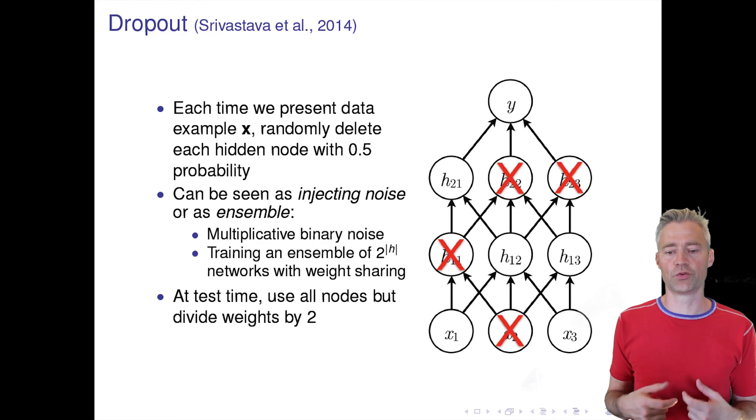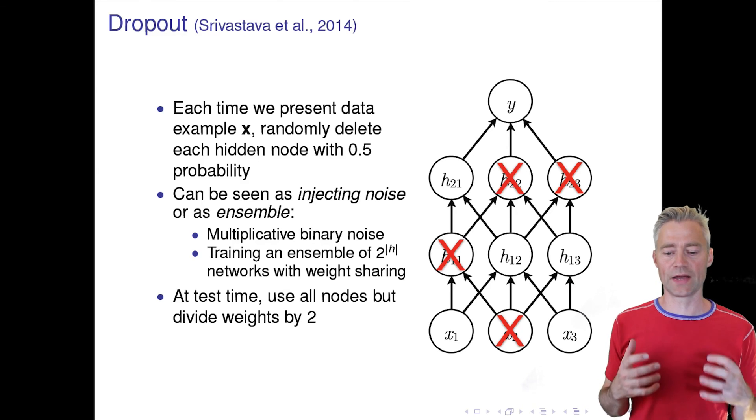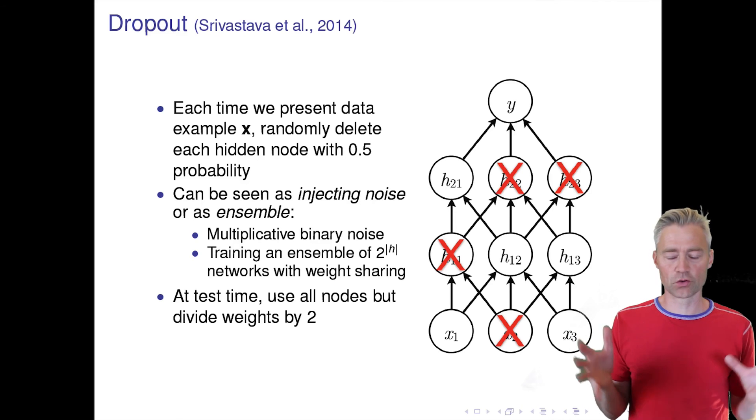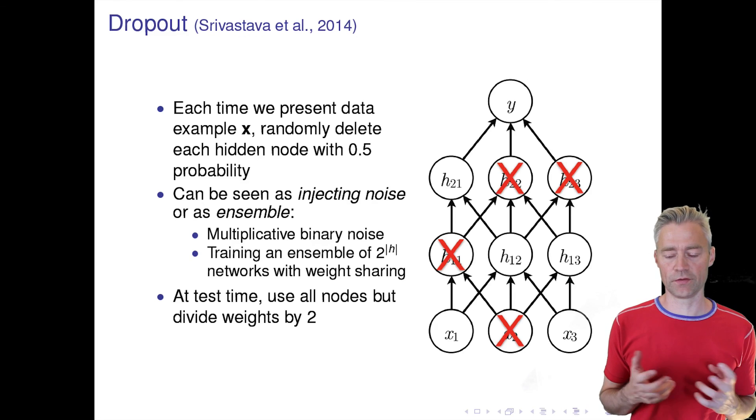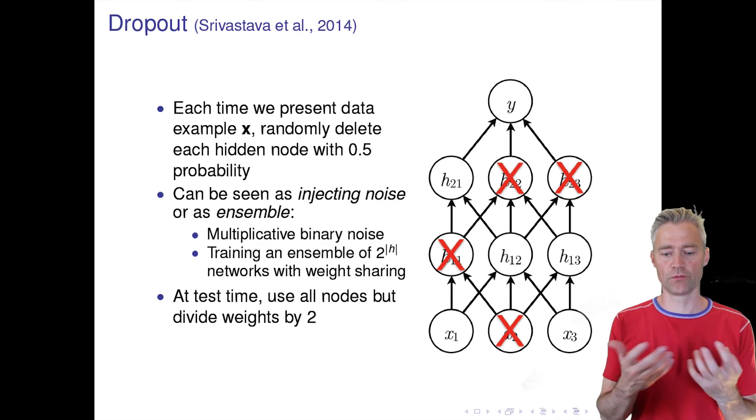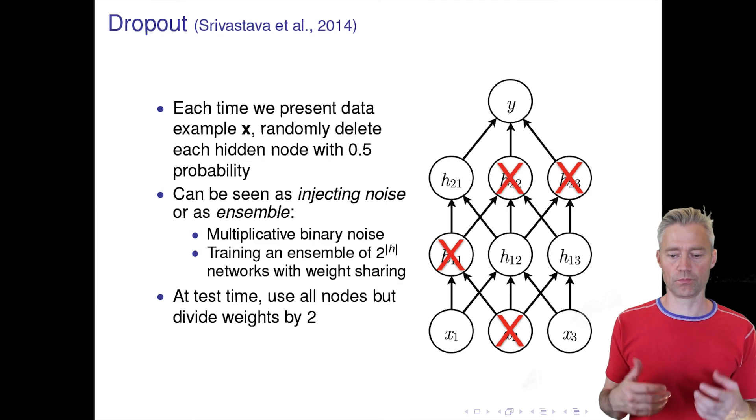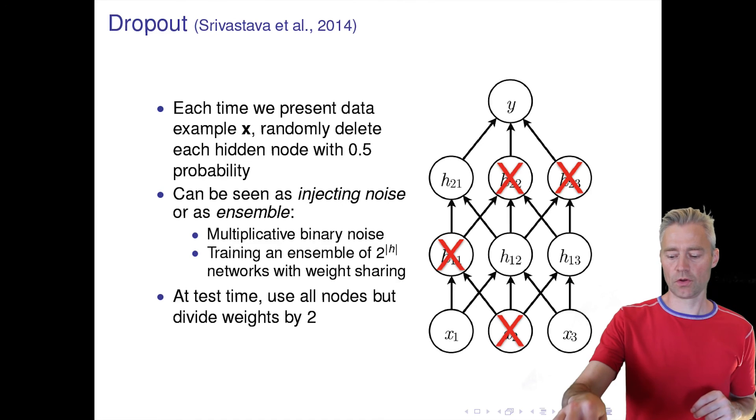There's also the fast and cheap way to do that, and that is simply by including all the weights but then dividing all the weights by a factor of two if we have had a 50 percent dropout rate. That is like a poor man's version of drawing this ensemble of many different dropouts at test time.